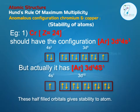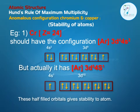But actually it has Argon 3d5, 4s1. This configuration gives half-filled orbitals. These half-filled orbitals give stability to the atom.